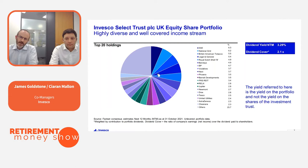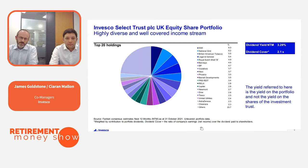The portfolio dividend for the next 12 months is forecast at about 3.3% — that's before the impact of gearing and before the board uses any flexibility to top up from capital. As shown on the slide, that dividend is well diversified across the portfolio and also well covered by the earnings of its constituents.